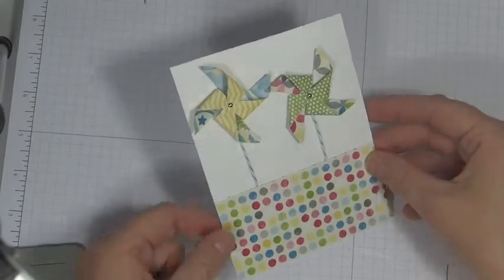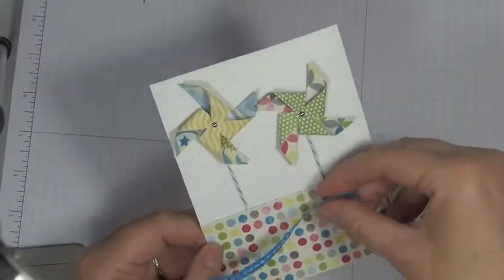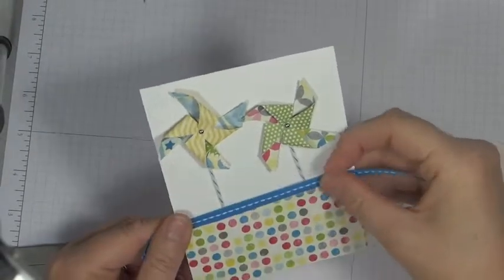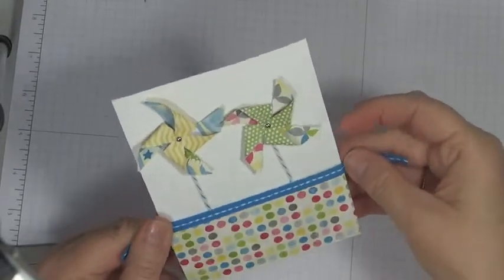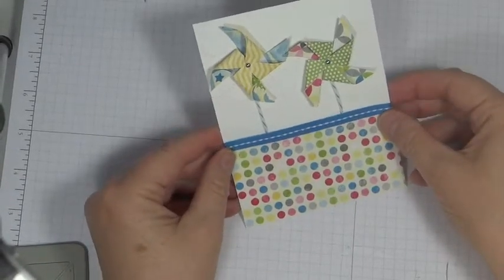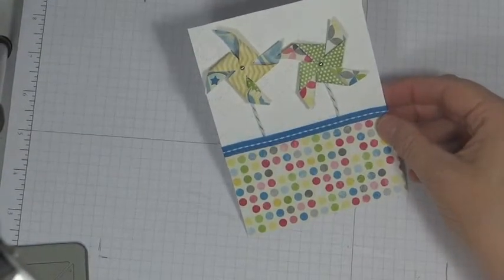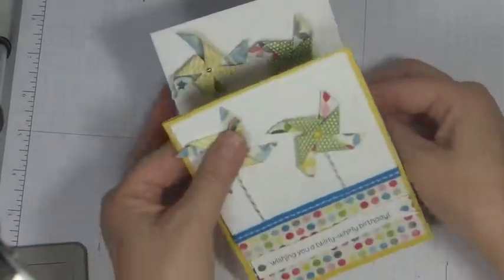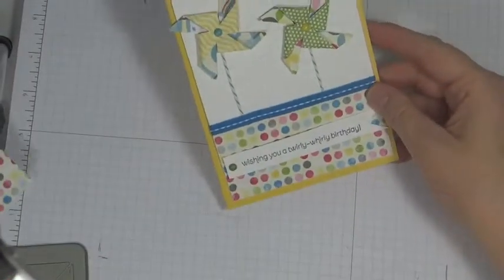And now I'm going to just trim up this paper. Okay at this point I've got my paper attached and the pinwheels are on and I want to apply this ribbon just around like that. Okay I've got my ribbon applied.